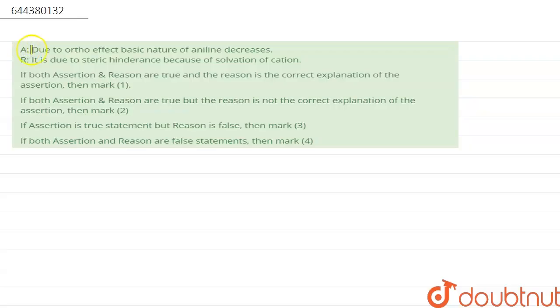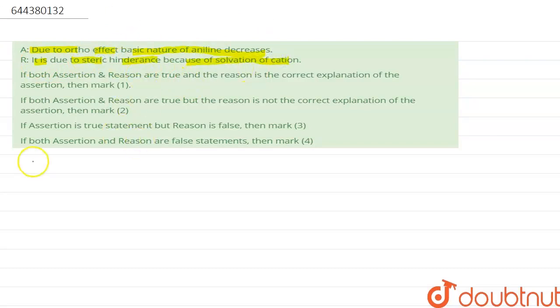The assertion is that due to the ortho effect, the basic nature of aniline decreases. The reason is that it is due to steric hindrance because of the solvation of the cation. Here are the options, so here is the solution.